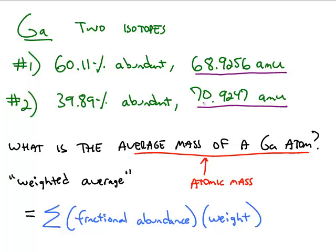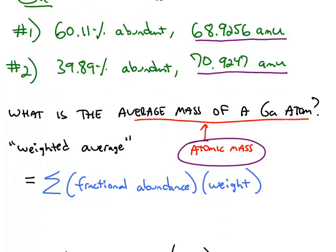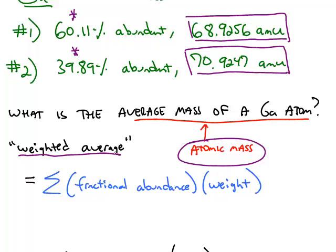So next we want to calculate the average mass of one gallium atom, which is called the atomic mass. This average is not just an average of the two masses, because you have to account for the percent abundance of each. When you do that, you're calculating a weighted average.